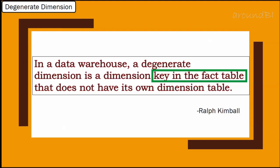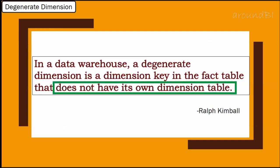In the fact table, it is not acting as a key, so it is not joined with any other dimension table. And second, it does not have its own dimension table as all the related attributes have already been placed into other dimensions.